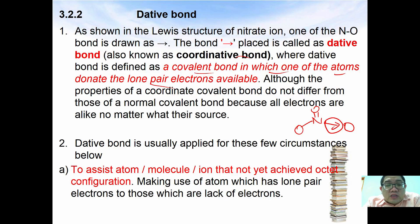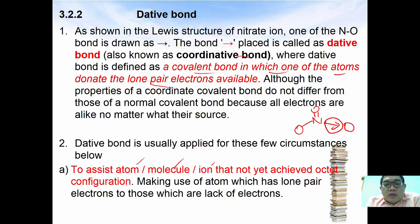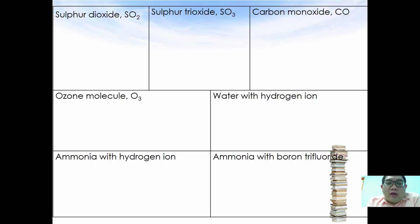Here are a few applications of dative bond. The first application is to assist atoms, molecules, or ions that have not yet achieved octet configuration, by making use of atoms which have lone pair electrons to donate to those which are lacking electron pairs.